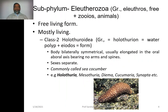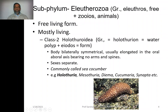Sub-phylum Eleutherozoa: 'Eleutheros' means free, and 'zoas' means animal, because they are free-moving animals that move from one place to another. They are mostly living. The class is Holothuroidea — 'holothurion' means water polyp — because they resemble the water polyp. Body is bilaterally symmetrical and usually elongated, along the oral-aboral axis. They don't have any arms.